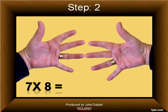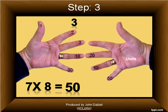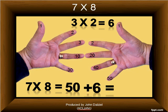The next step is the fingers touching and those below are counted as tens. So we have 10, 20, 30, 40, 50. So far we've got 7 times 8 equals 50, and then the next step is the fingers above those touching. And we have 3 on the left and 2 on the right. These we multiply, so 3 times 2 is 6, which we add to the 50. So 7 times 8 is 50 plus the 6, which is 56.